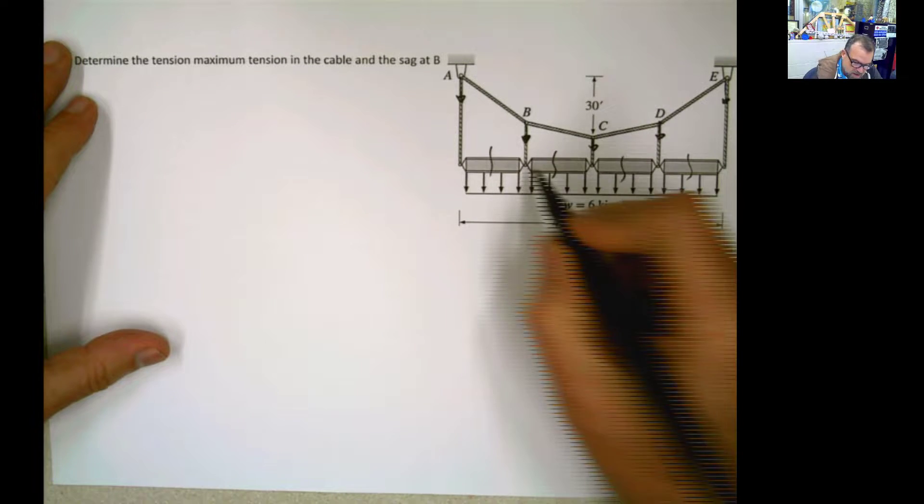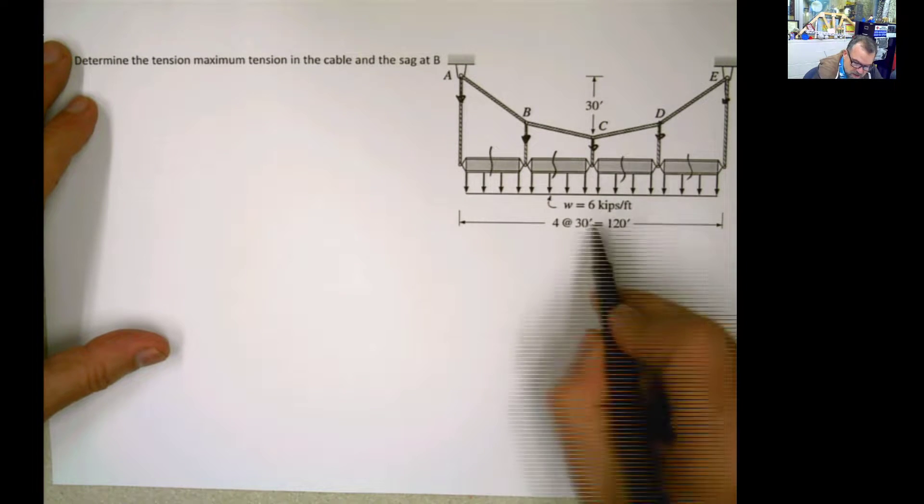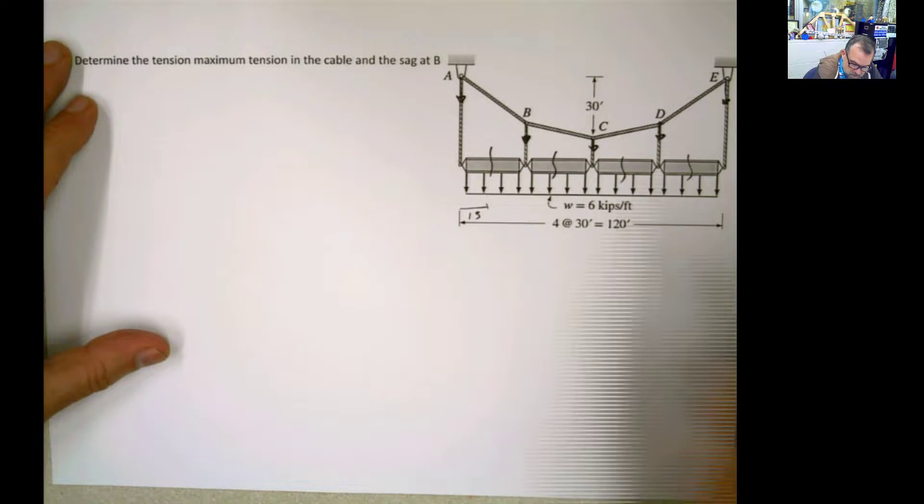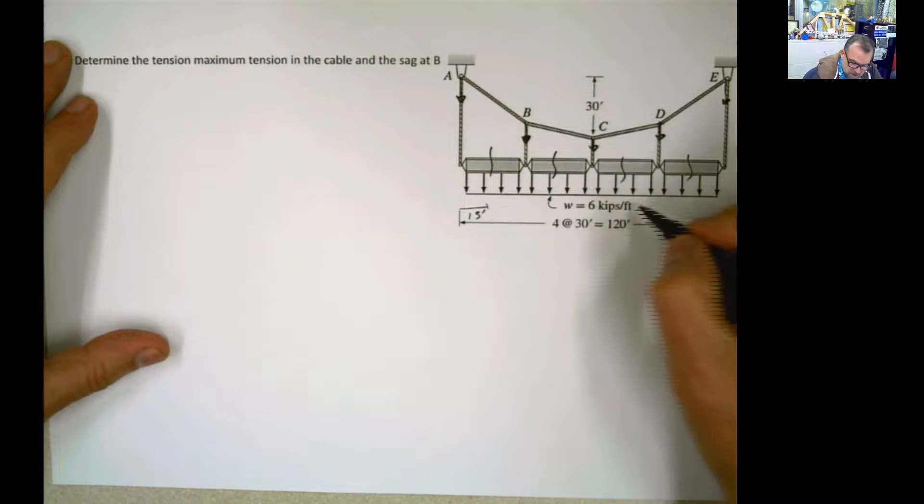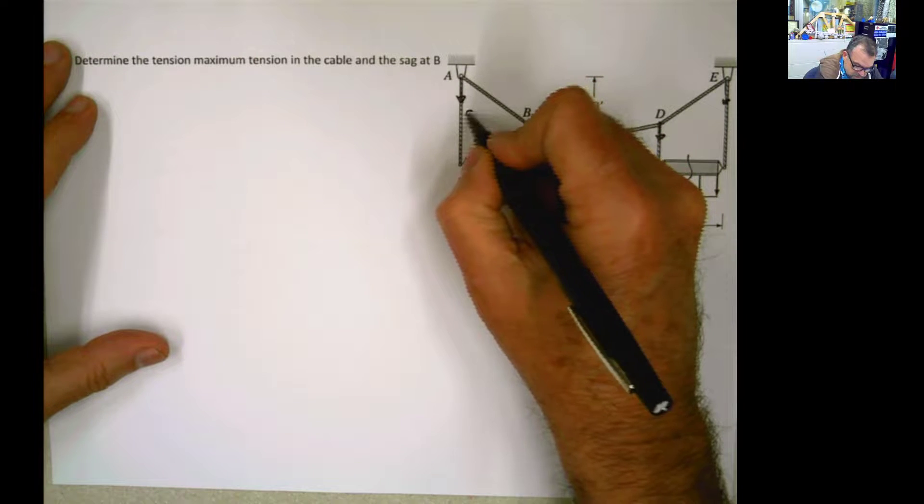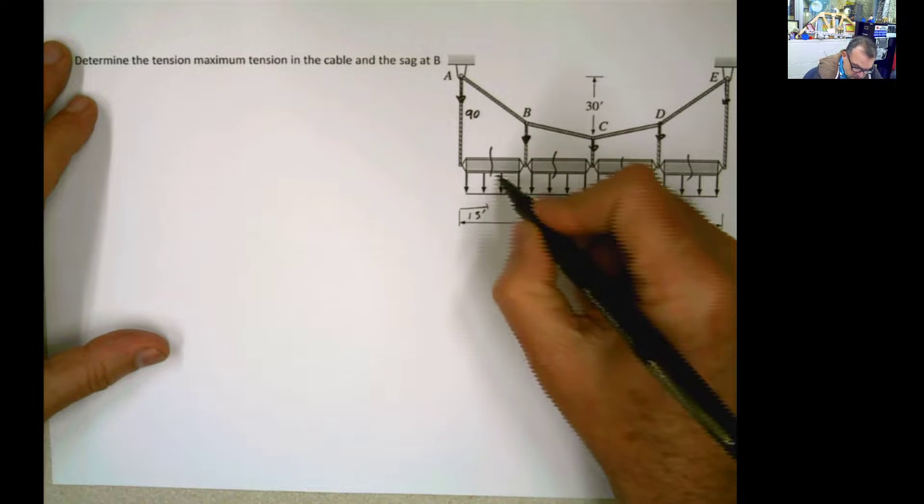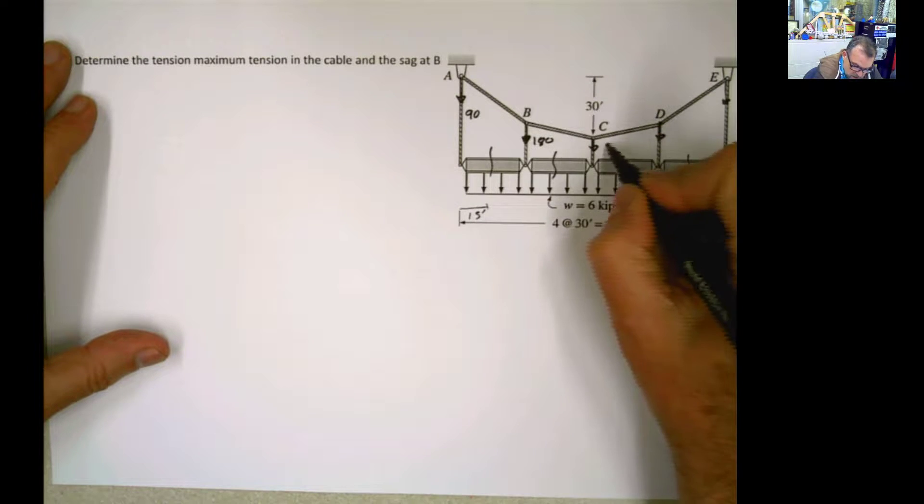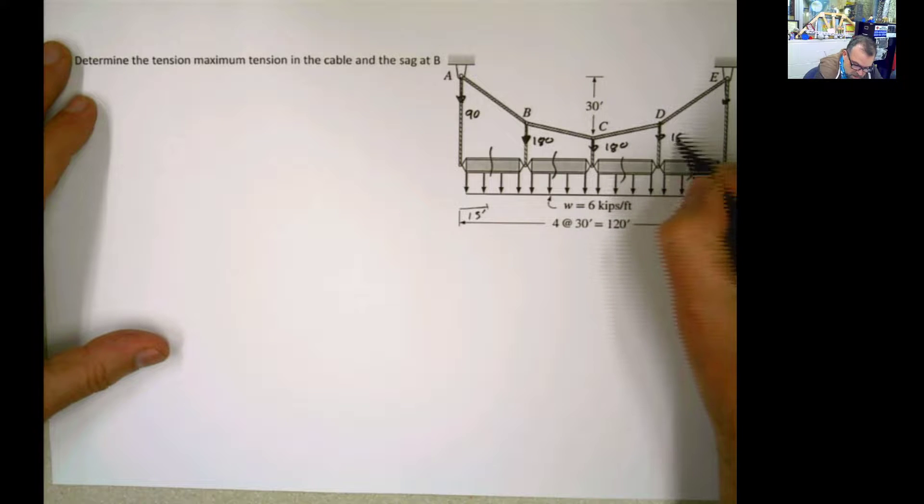How much is that? This is going to be every span is 30, meaning this distance here is going to be 15. And the load is 6. 15 times 6, this is 90. And if this is 90, this is 90. And this is 180, 180, 180, and 90 again. There you go.